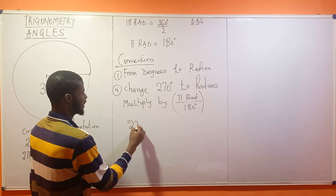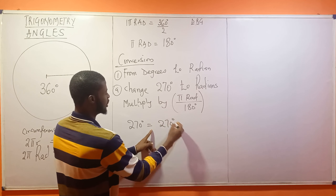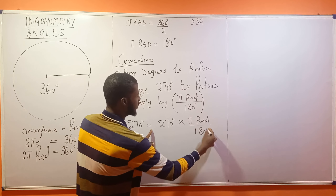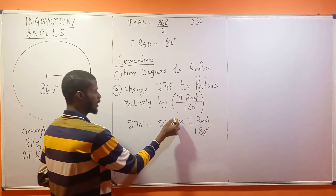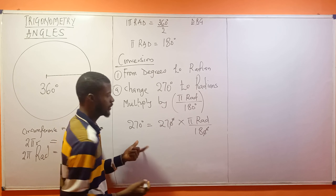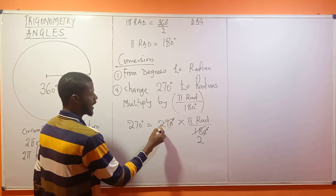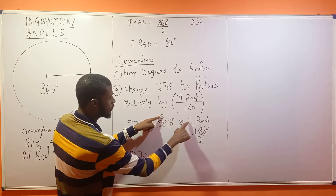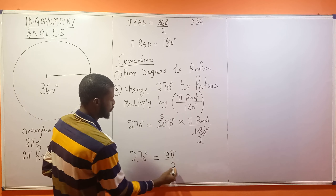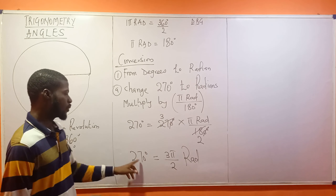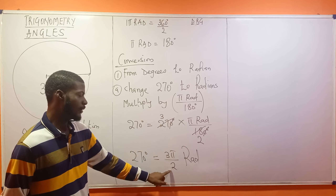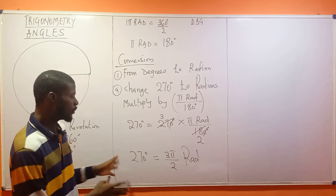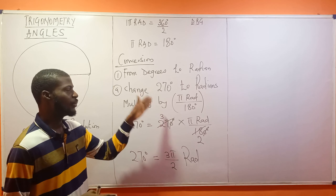Change 270 degrees to radians. In terms of radians, 270 degrees becomes 270 degrees × (π radian / 180 degrees). Cancel the zeros — 9 goes into 27 giving 3, and 9 goes into 18 giving 2. So 270 degrees equals 3π/2 radians. Someone can also say 3/2 π radian.